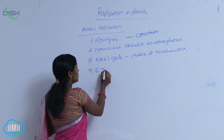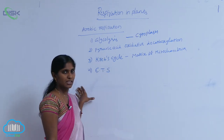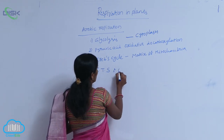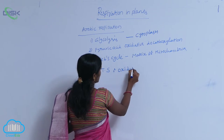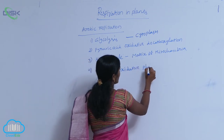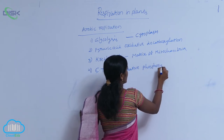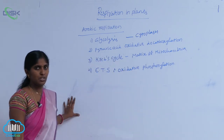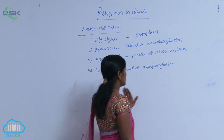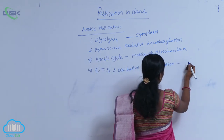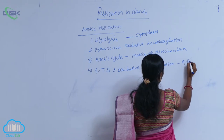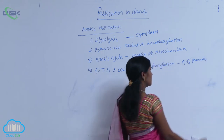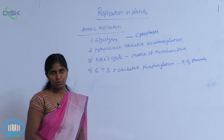The next two steps are the electron transport system, also called ETS, and oxidative phosphorylation. The electron transport takes place on the F1 and F0 granules, which are present in the cristae of mitochondria.